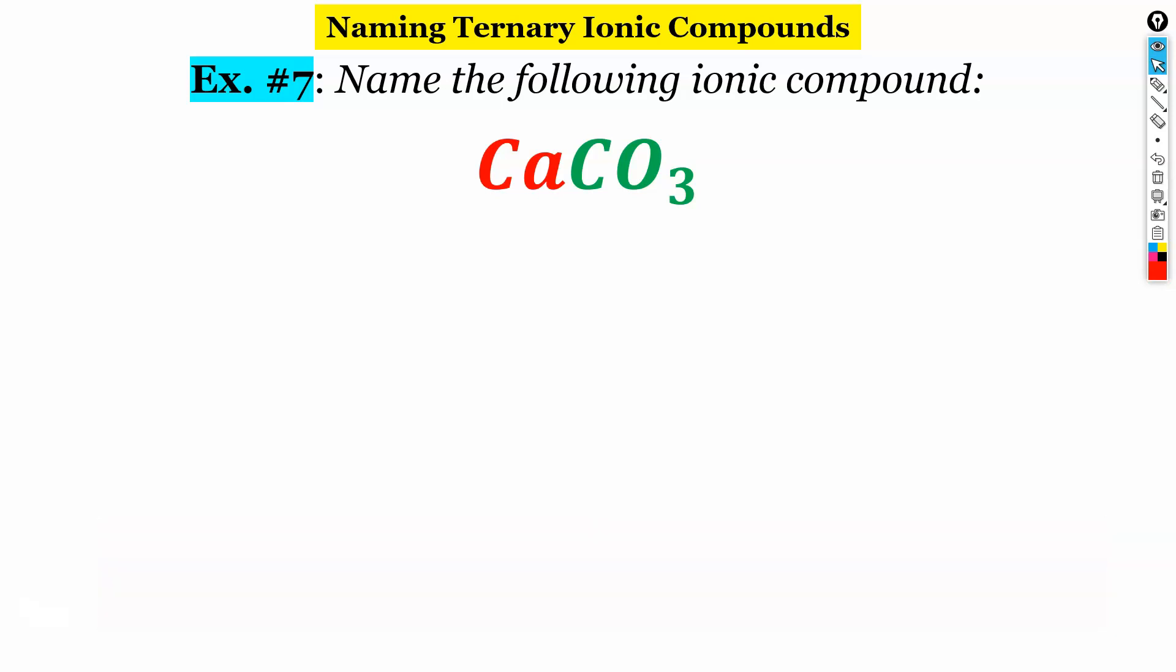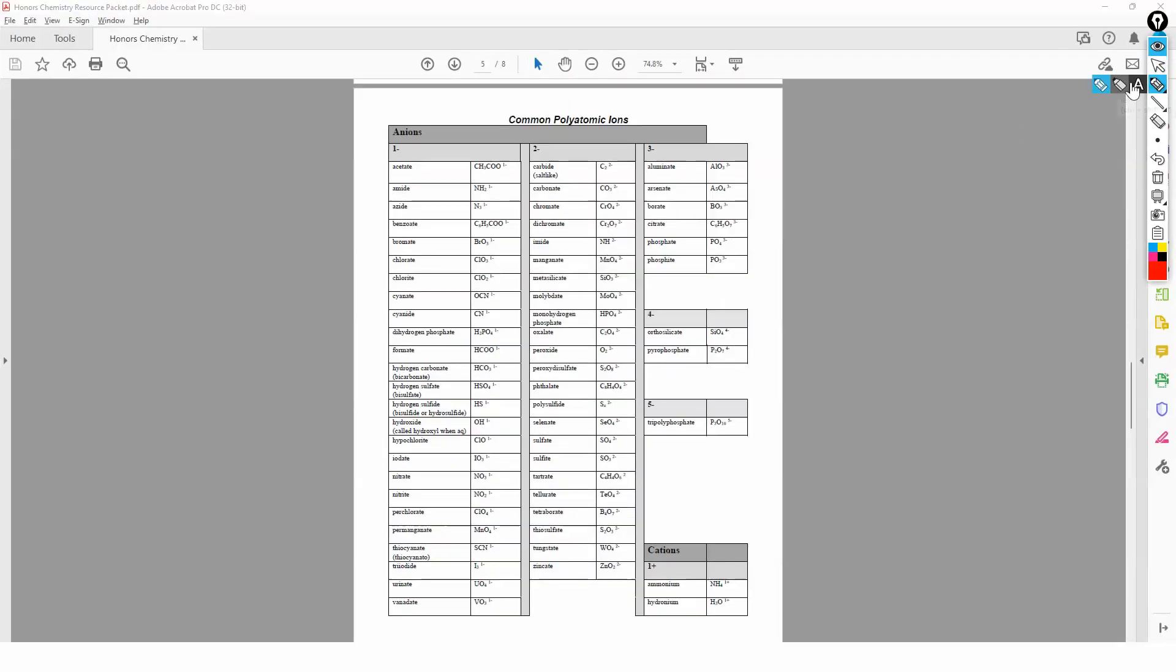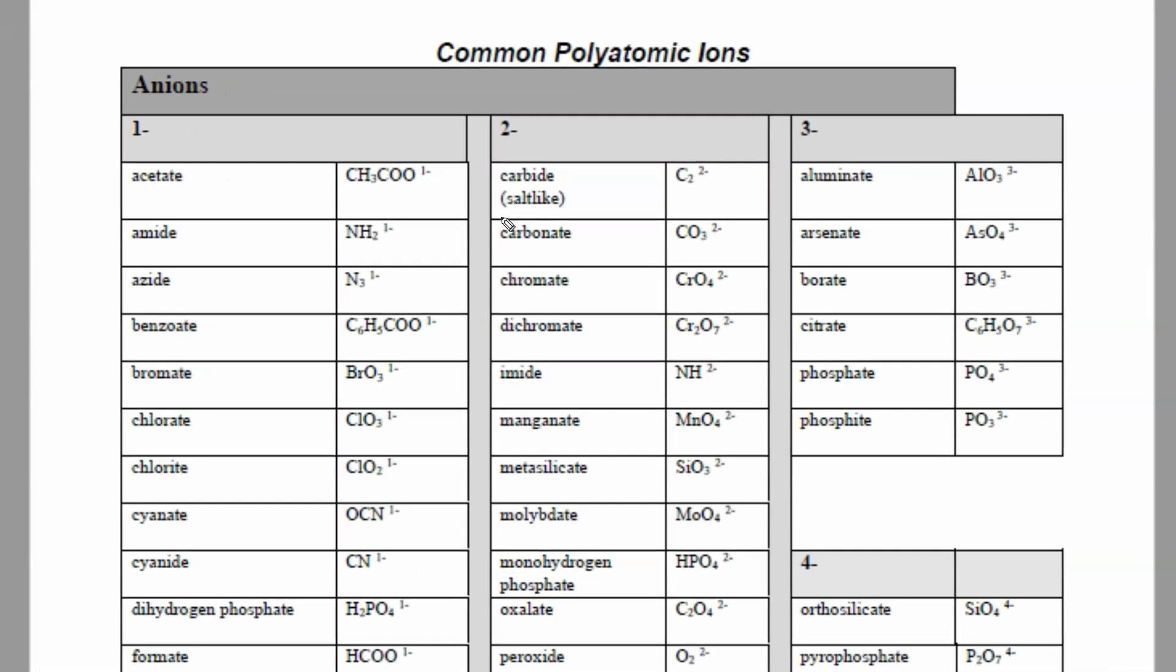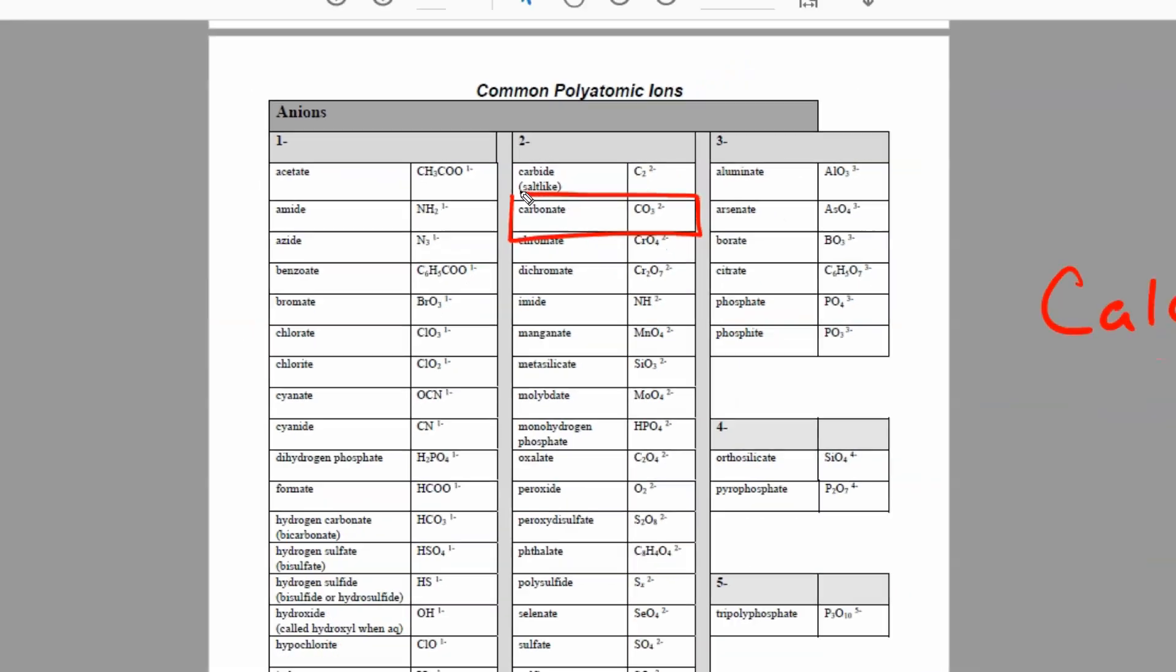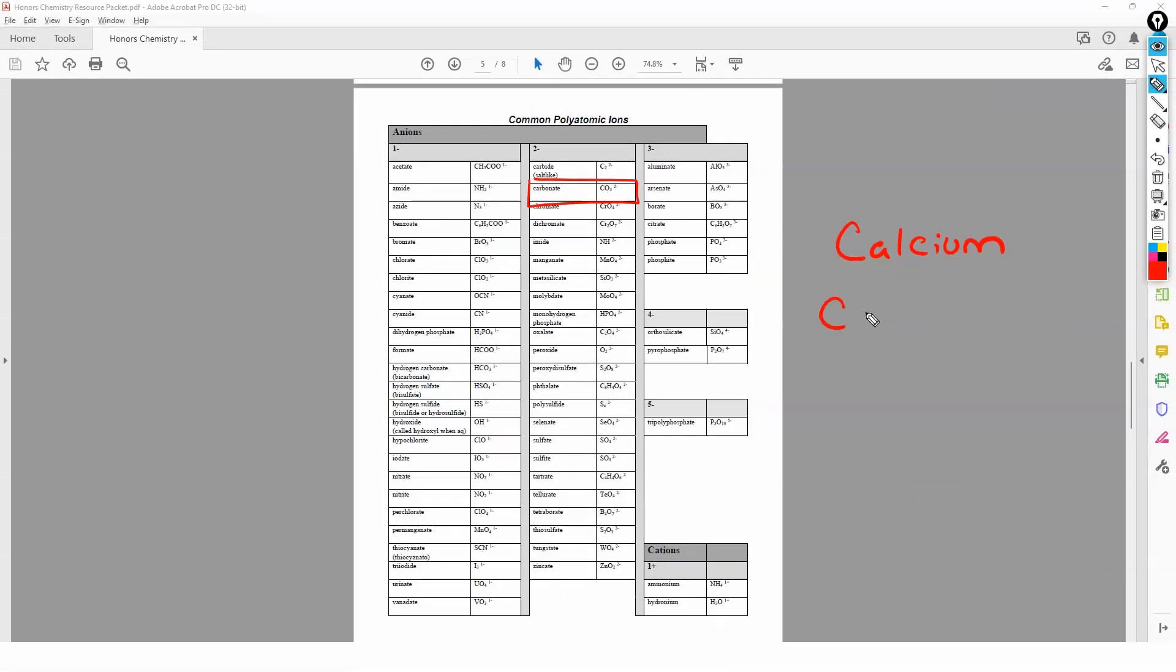We've got calcium, and then we have CO3. So calcium is just calcium. And then CO3 is right here. That's carbonate. Calcium carbonate.